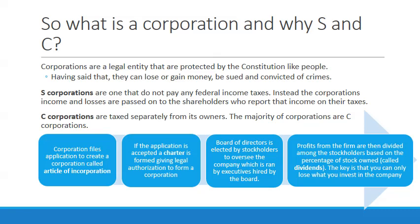Profits from the firm are divided among stockholders based on the percentage of stock they own — this is called the dividend. You can only lose what you invest. If you own 23% of the stock, you gain 23% of the profits. To control the corporation, you only need 51% of the stock for majority control, and that's how corporations work.